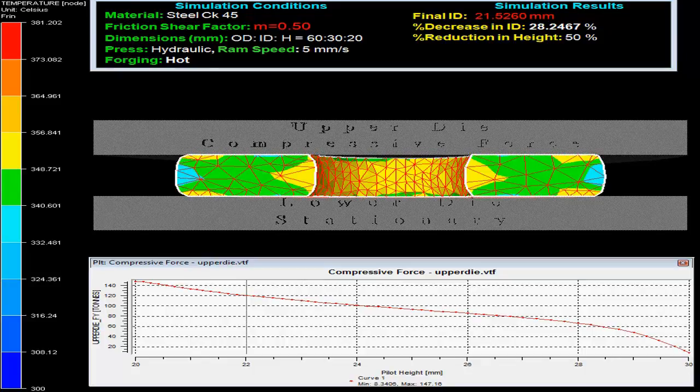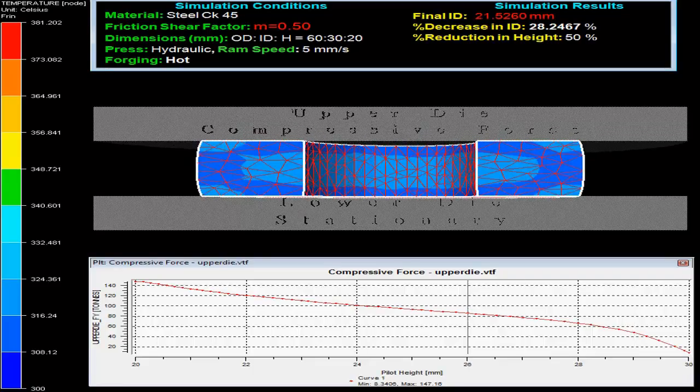The press used is hydraulic press with ram speed 5 mm per second and forging is done hot.